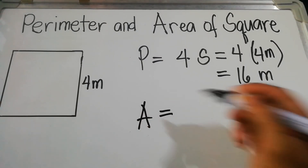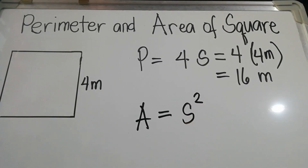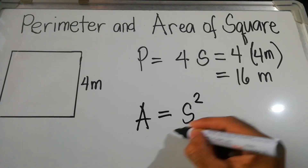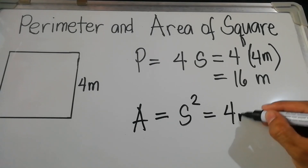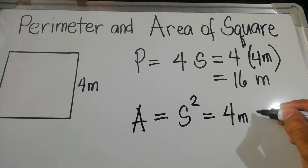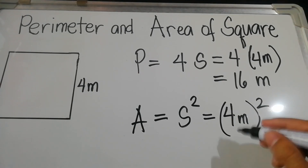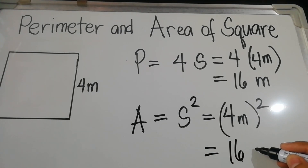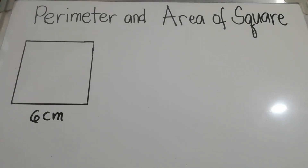The perimeter equals 16 meters. For the area of the square, that is equal to s squared — so 4 meters squared, or 4 times 4 — meaning the area is equal to 16 square meters.